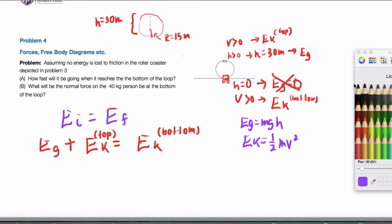So now what you'll end up getting here with your numbers is mgh plus one-half mv. And you know what? I'm just going to, sorry. mgh plus one-half m. You'll see why I'm doing this in a second. v at the top squared equals one-half mv at the bottom squared.